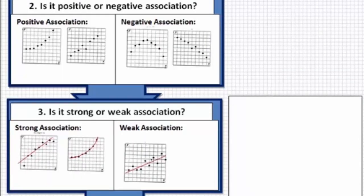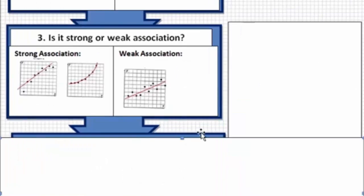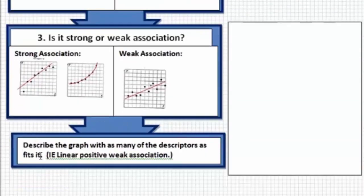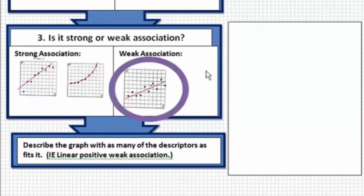As you kind of heard me say before, we're going to start using all the words from these questions that we were asking ourselves to describe the graph. So if I was to be looking at this graph right here that I just put the purple circle around, then I could say that it's linear positive weak association. Linear because it does seem to form a line in the general shape of a line. It's positive because it's increasing as I read the graph from left to right. But it's weak because the points don't fall all that close to this line.